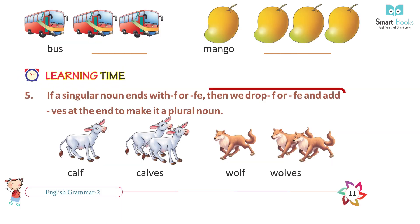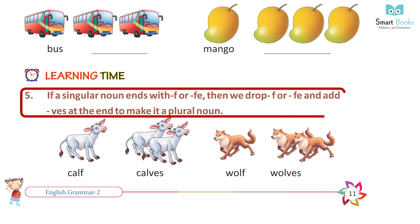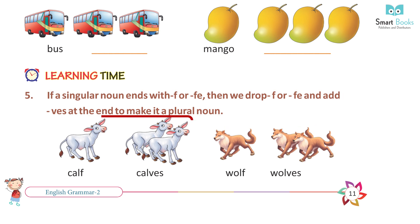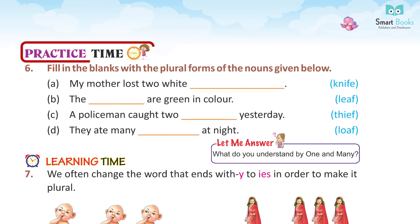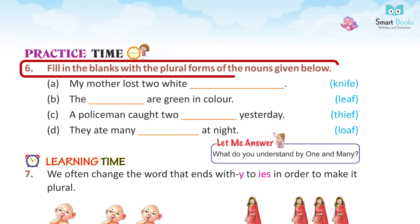Learning Time 5. If a singular noun ends with F or FE, then we drop F or FE and add VES at the end to make it a plural noun. Calf — calves. Wolf — wolves. Practice Time 6.